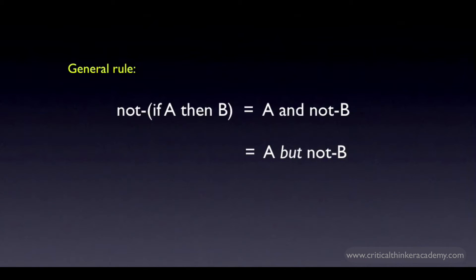Here's the general rule that makes this clear. The contradictory of a conditional is a conjunction that affirms the antecedent of the conditional but denies the consequent. Almost always, though, it's more natural to phrase the contradictory as A but not-B, as in, I pay for dinner but you don't pay for drinks.